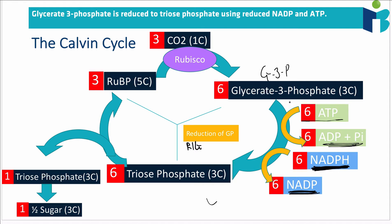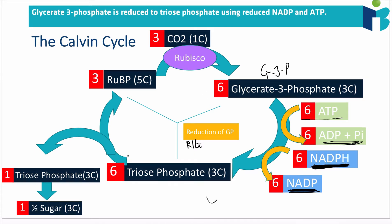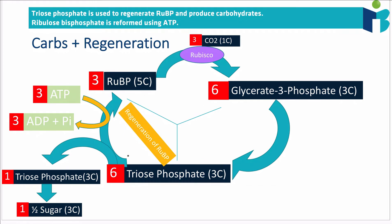Both ATP and NADPH were formed in the light-dependent reactions, which illustrates why we needed to perform the light-dependent reactions first — before the light-independent reactions — because we depend on that ATP and NADPH. After this reduction step, glycerate 3-phosphate is converted into another three-carbon molecule called triose phosphate, and since there are six glycerate 3-phosphate molecules, there are also six triose phosphate molecules.